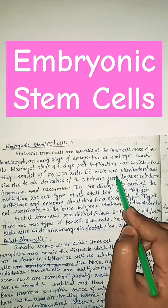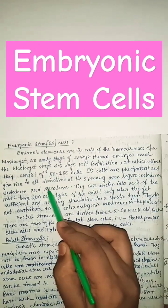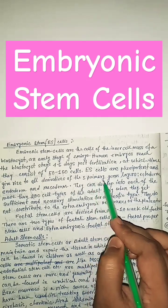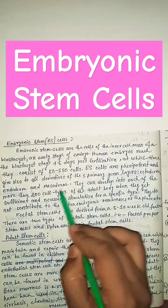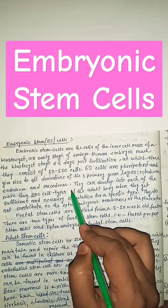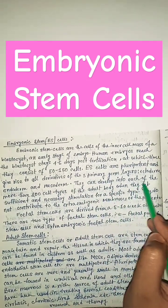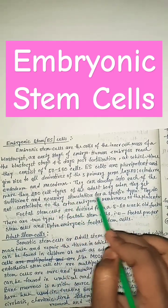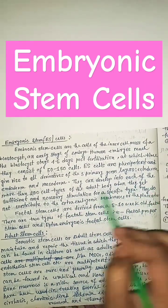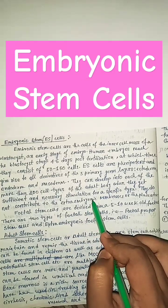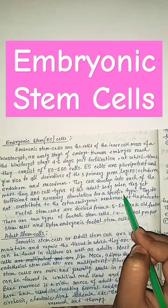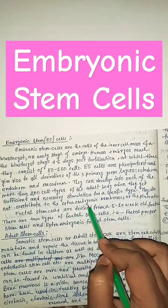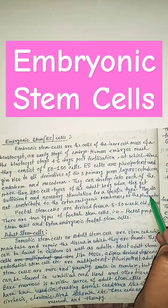Embryonic stem cells are pluripotent and give rise to all derivatives of the three primary germ layers: ectoderm, endoderm, and mesoderm. They can develop into each of the more than 200 cell types of the adult body when they get sufficient and necessary stimulation for a specific type. They do not contribute to the extra embryonic membranes or the placenta.